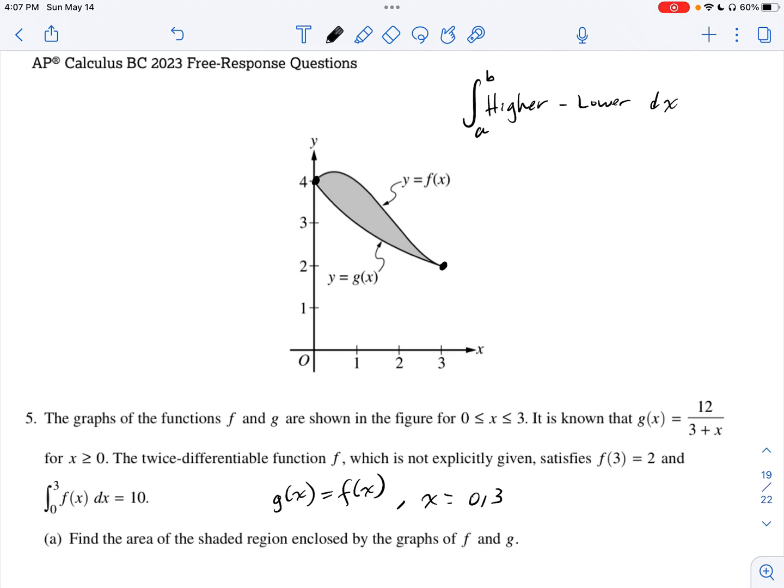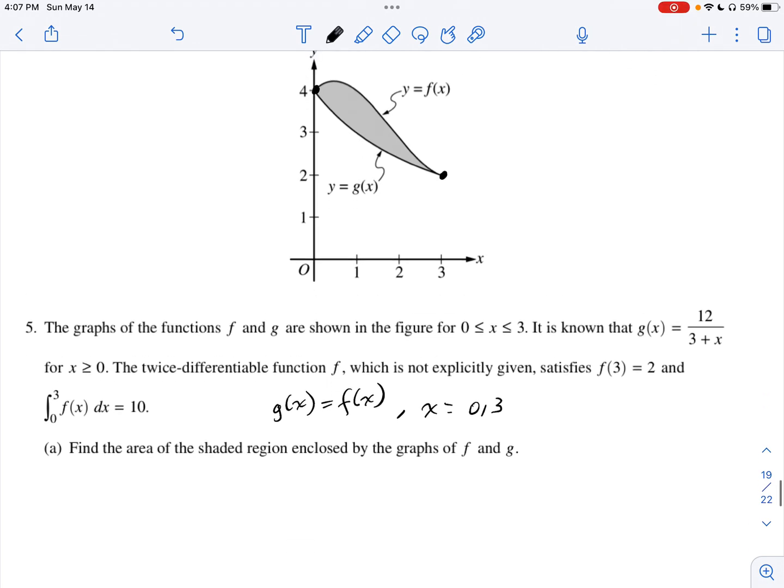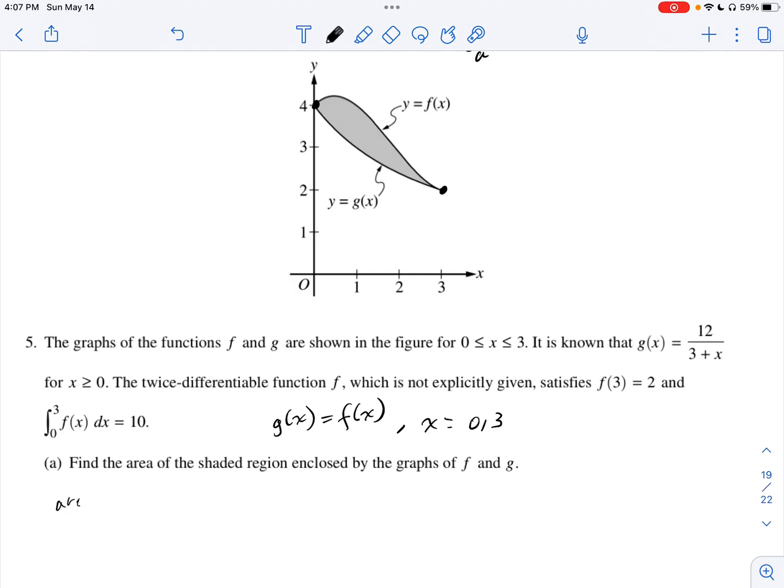So first things first, find the area of the shaded region enclosed by the graph of F and G. We know that whenever we're finding the area in between two curves given by functions, we always want to think of it as the higher minus the lower in terms of our integral. So we want to integrate the higher function minus the lower function from the two points where our functions are intersecting.